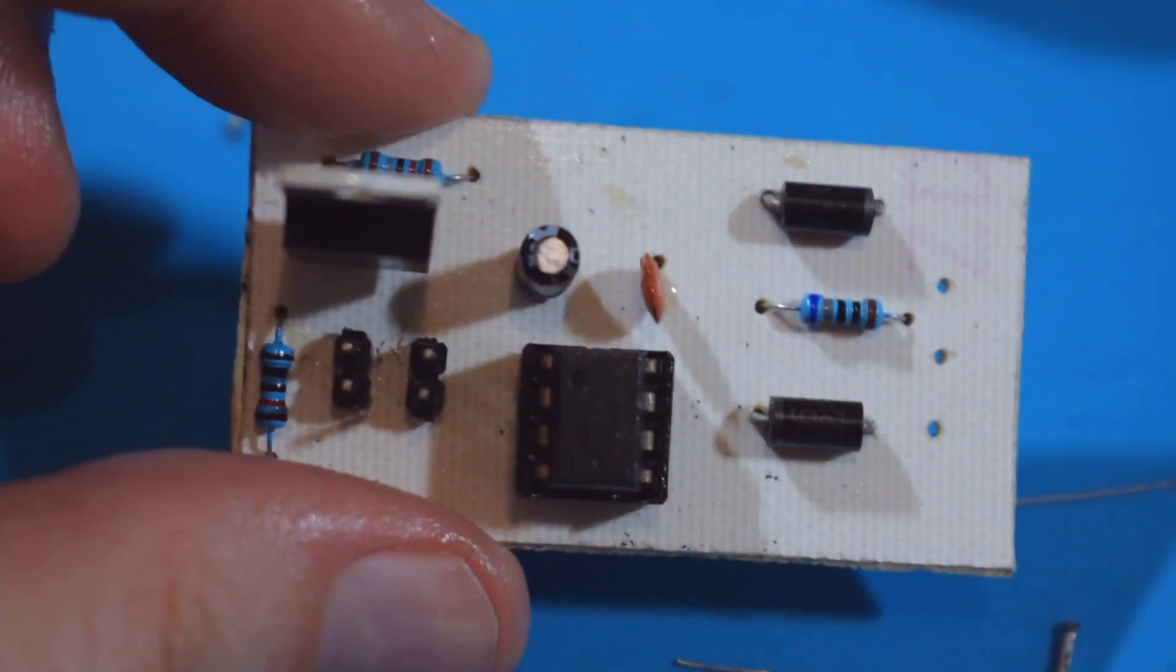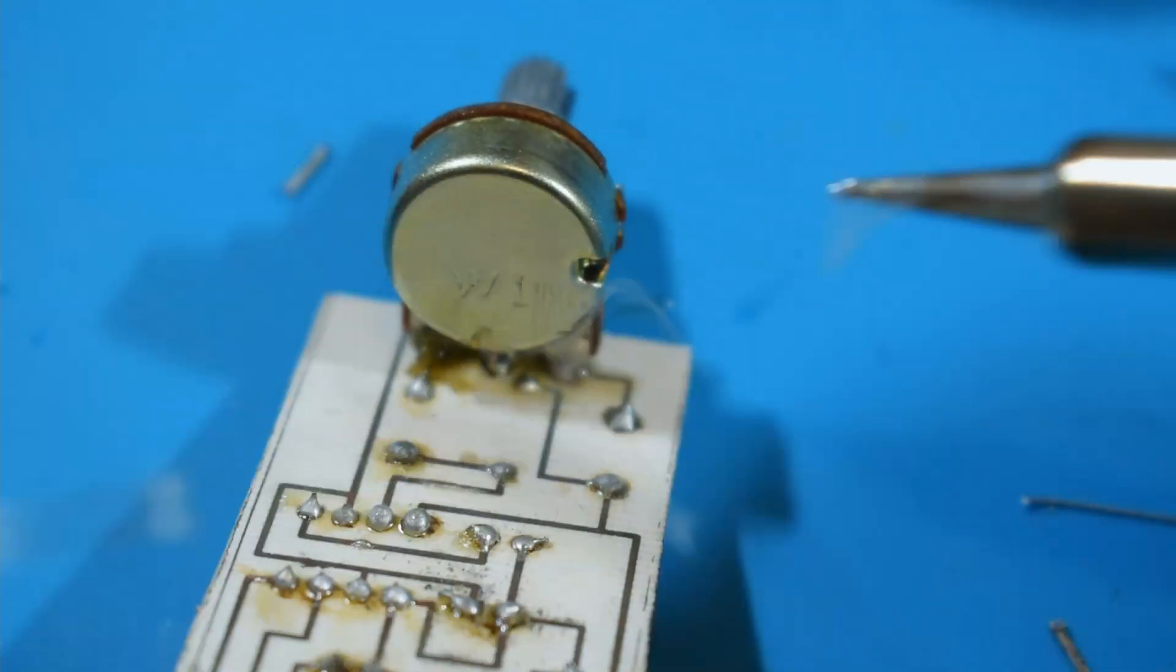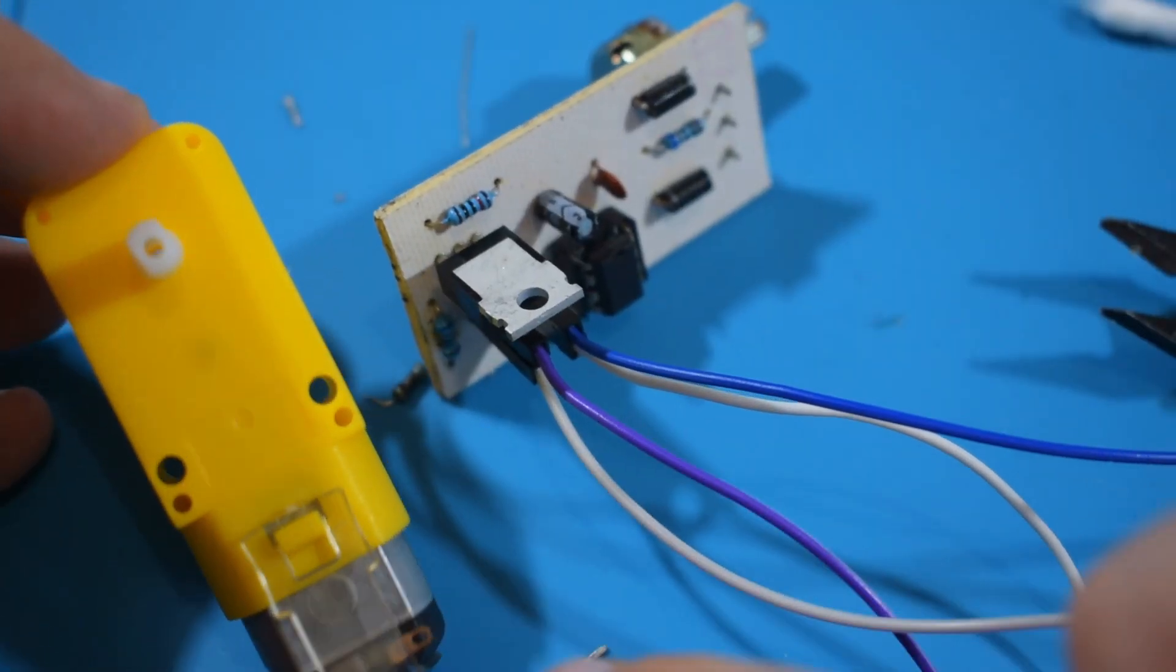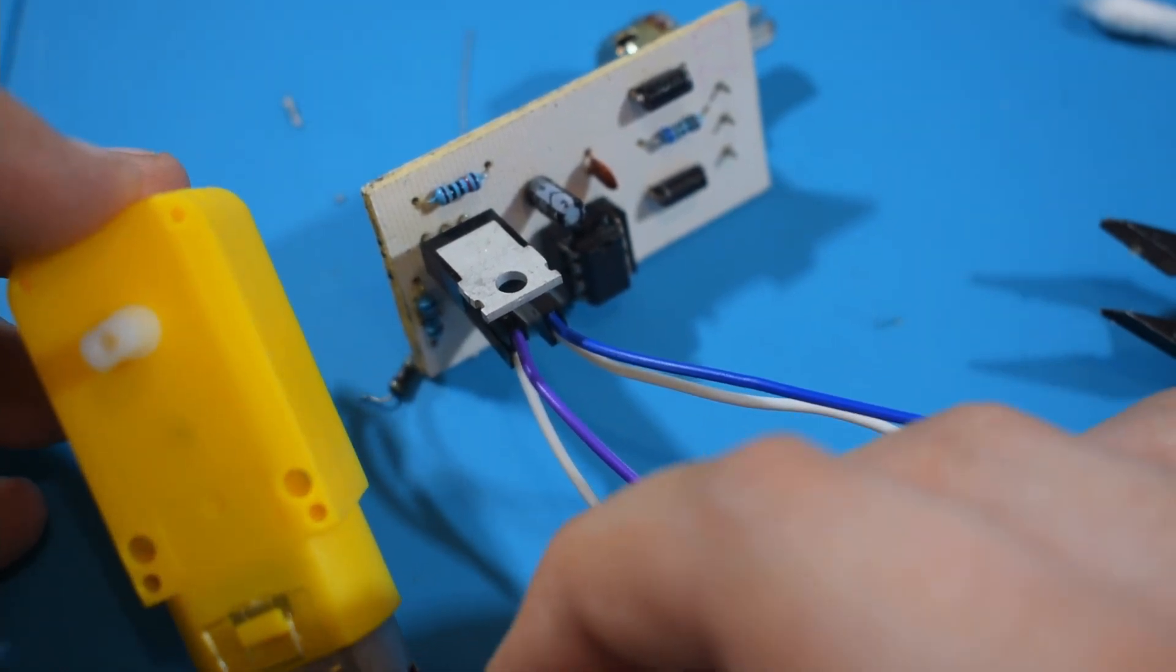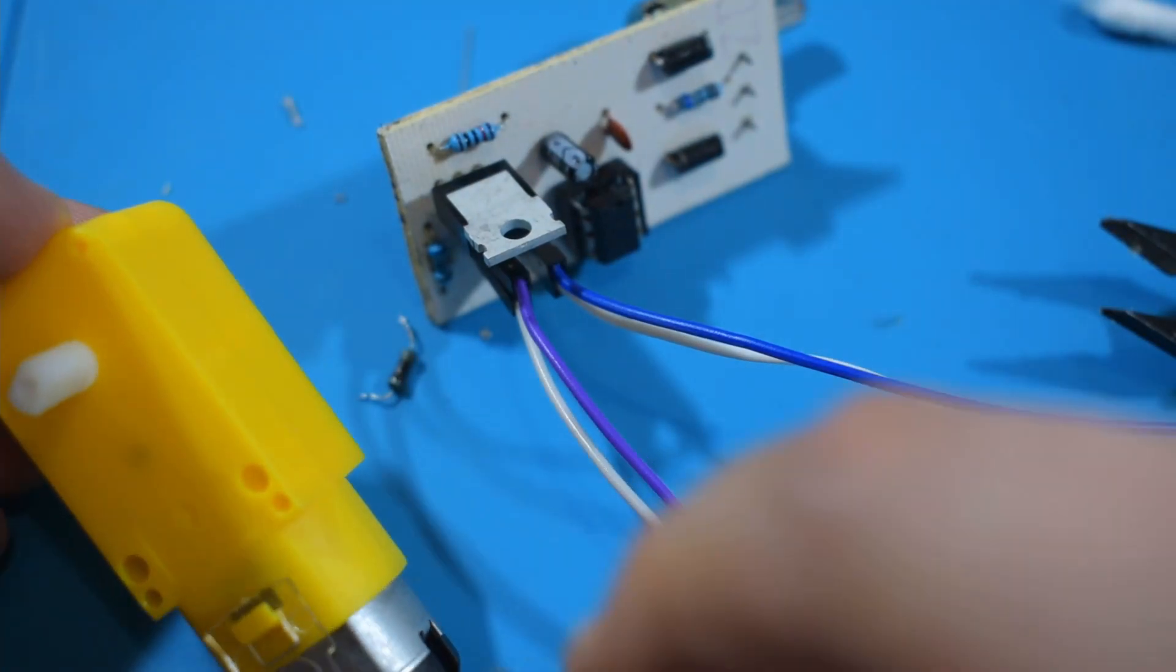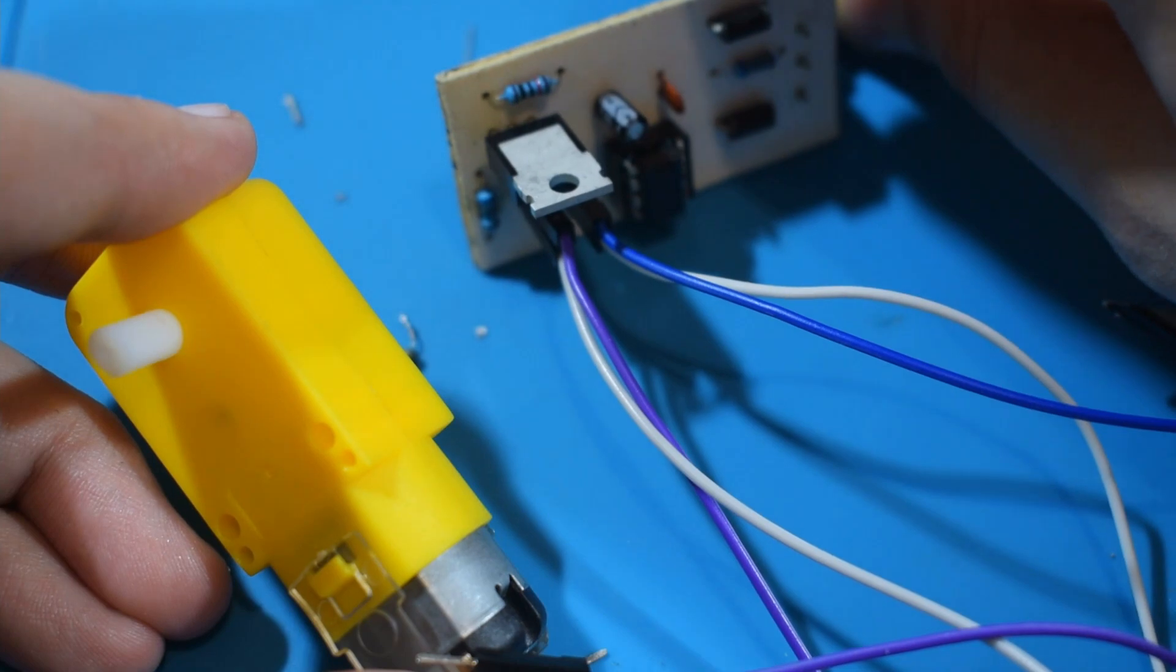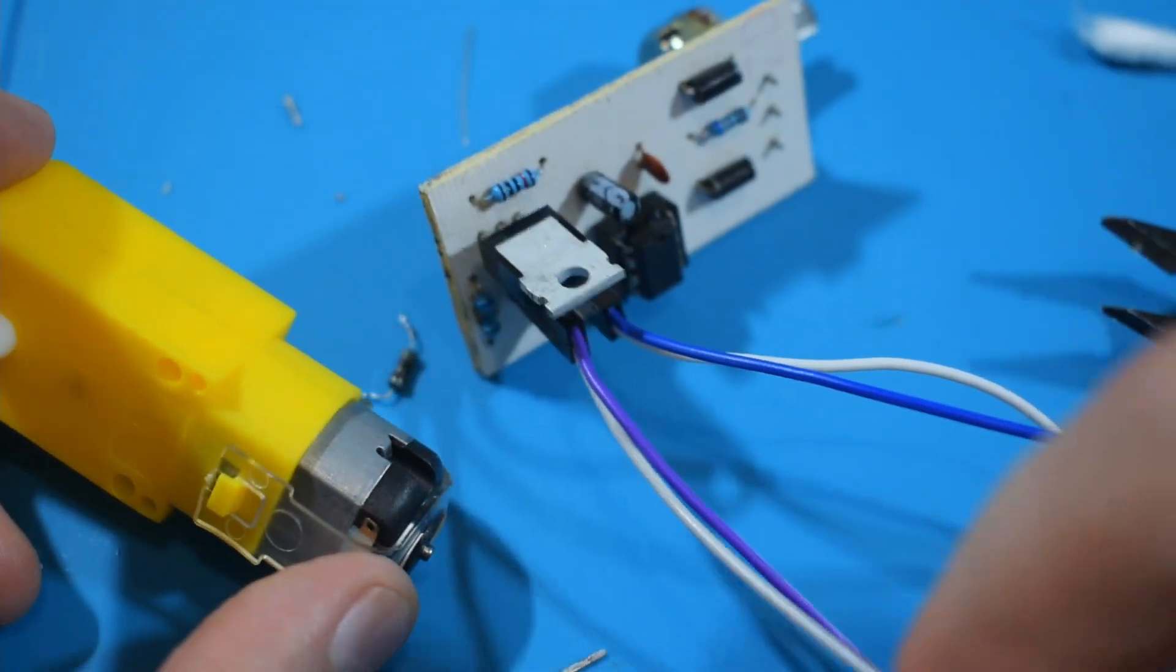Now, the moment of truth, it's time to test the circuit. Okay, so I finally got it to work. The only problem is that it doesn't really regulate speed of the motor. I can change the potentiometer as much as I want but the speed is not being regulated.